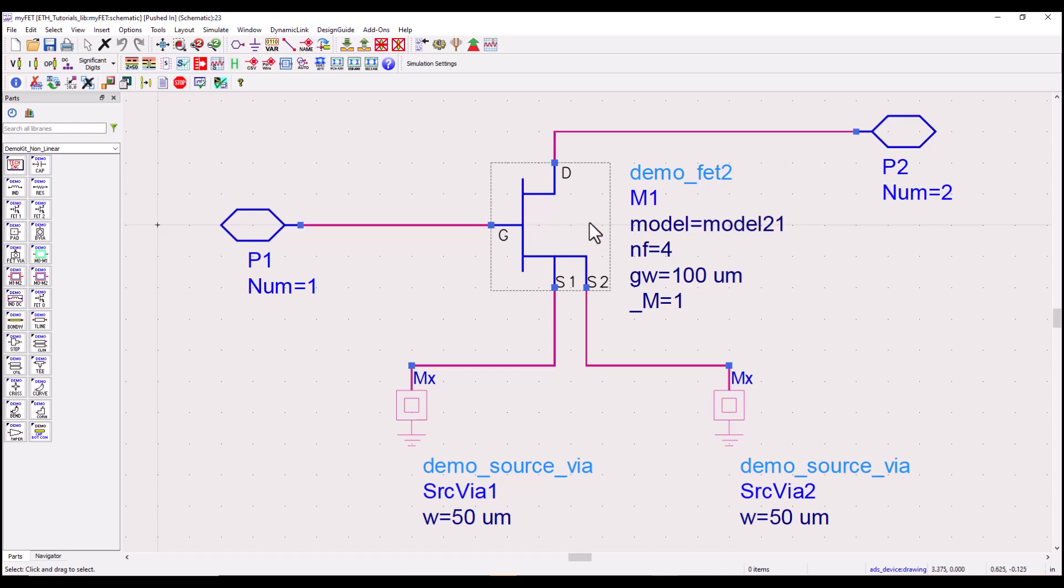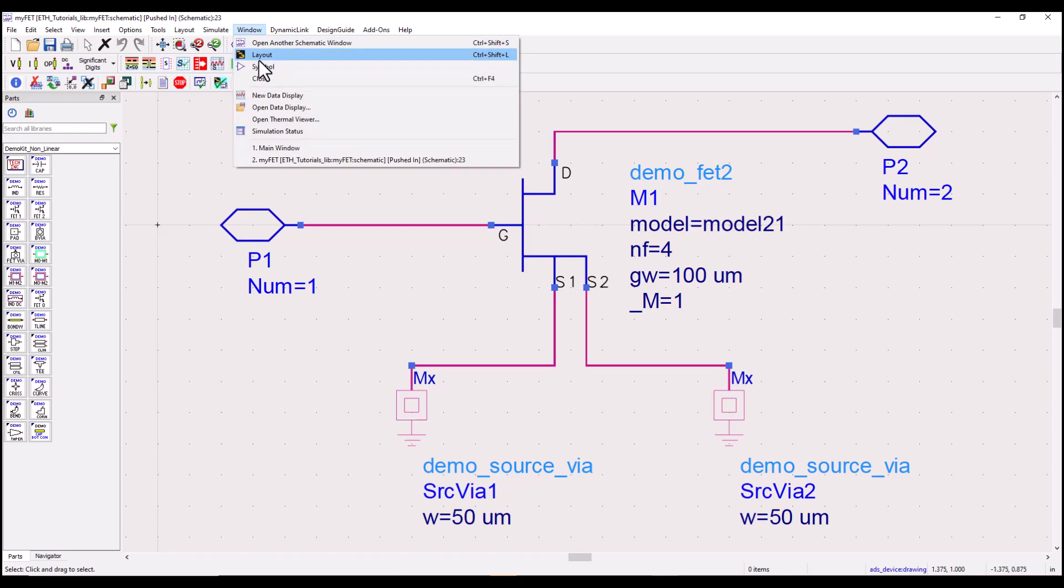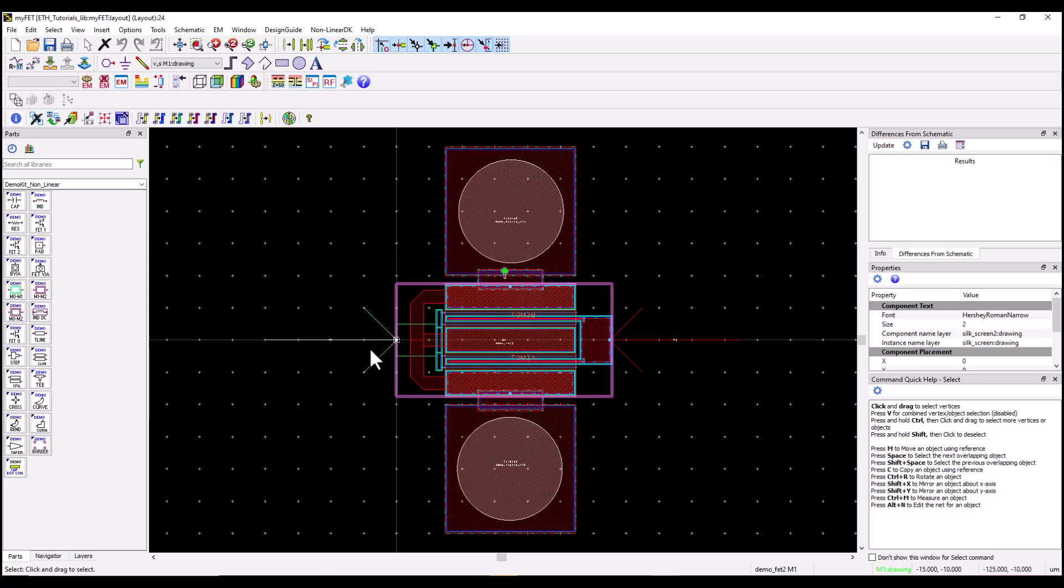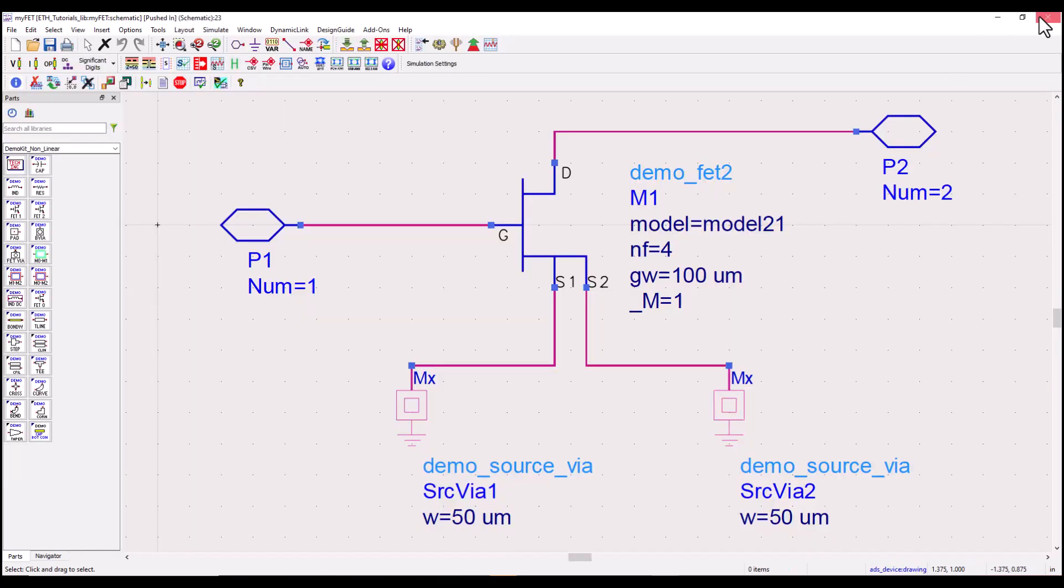Now this schematic view also has an associated layout view. Remember we need to have both the schematic and layout representation of the circuit. Here you can also see one FET device couple of FET vias and one pin on the either side of the device which is kind of similar to what you have in schematic.